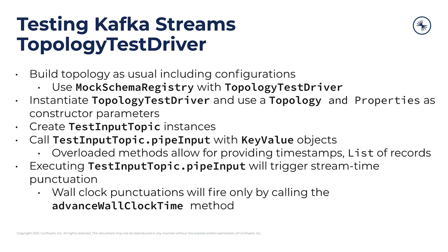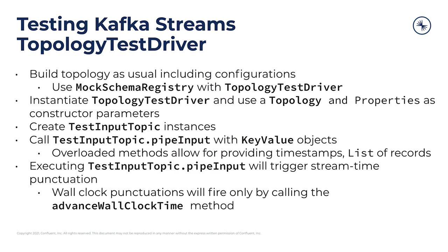Some interesting things to note about the test input topic: executing pipe input will actually trigger a stream time punctuation. This is just part of the nature of the test input topic — it can provide normal stream time punctuations. It does not provide wall clock punctuations because punctuations that go by wall clock time can be a little bit hard to test deterministically. It's an important part of your tests that they are reproducible and not resulting in potentially flaky test failures. So instead of going by actual wall clock time passage, in the topology test driver you need to use the advance wall clock time method to actually advance time. That gives you control over the way that wall clock time advances, as opposed to trying to sleep on your thread or something else that is just not as precise.